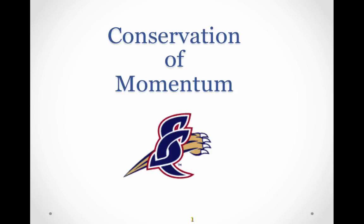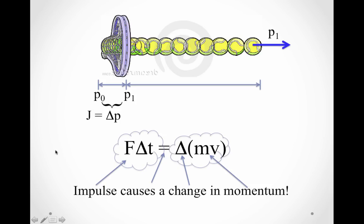Conservation of momentum. We've seen from our previous work that impulse causes a change in momentum: J equals delta P. The delta P here comes from the fact that the tennis ball wasn't moving initially, but after the impulse of the tennis racket hitting it, the momentum of the tennis ball changed and now has positive momentum P1. So that impulse of the tennis racket hitting the ball gave the tennis ball momentum.